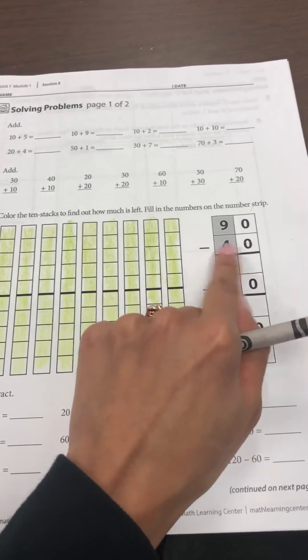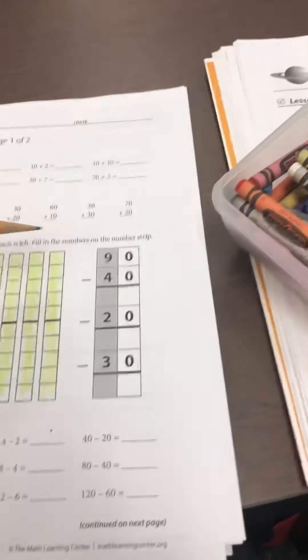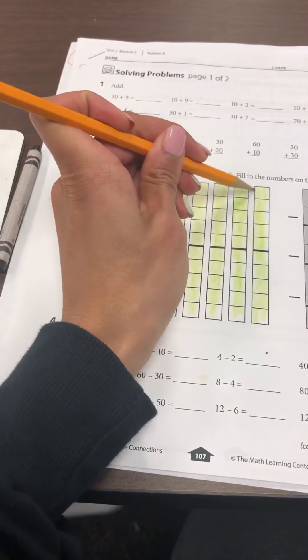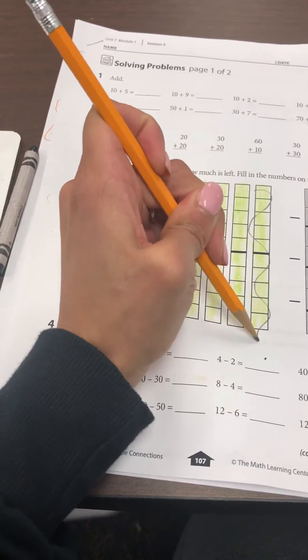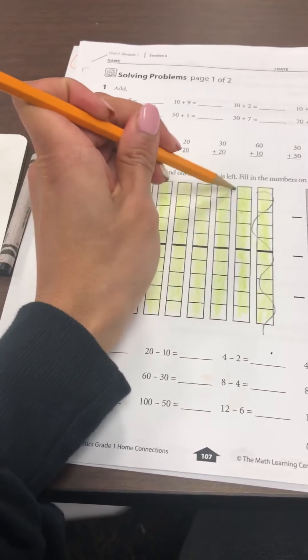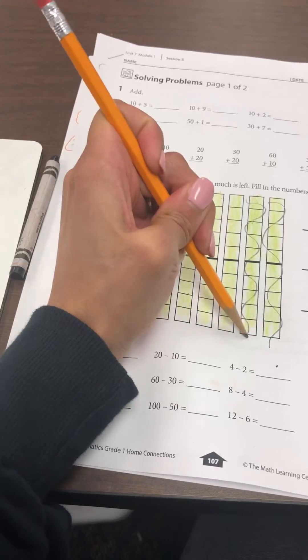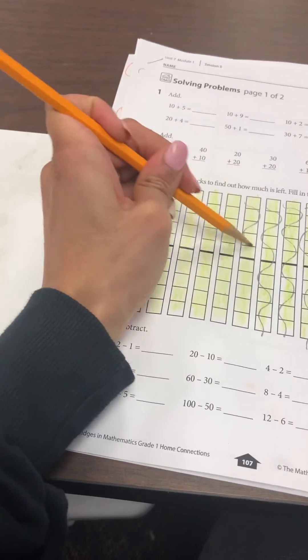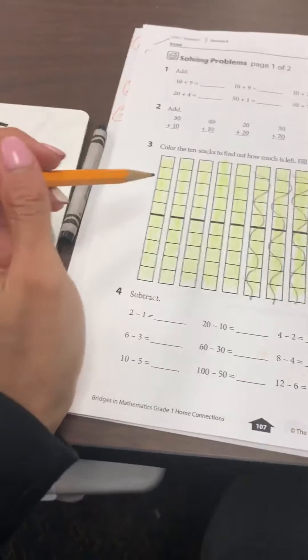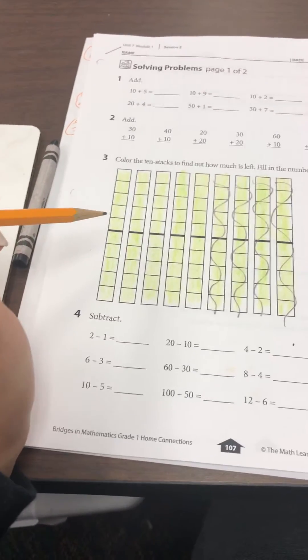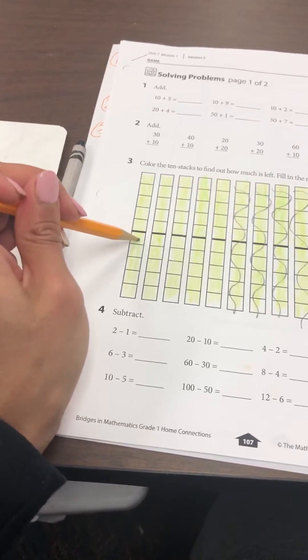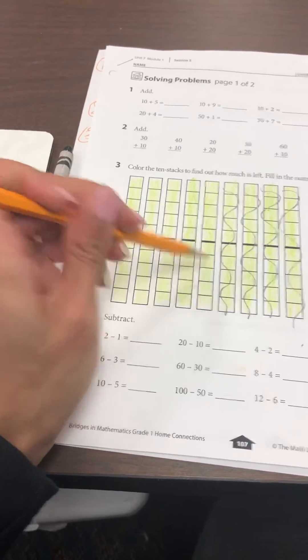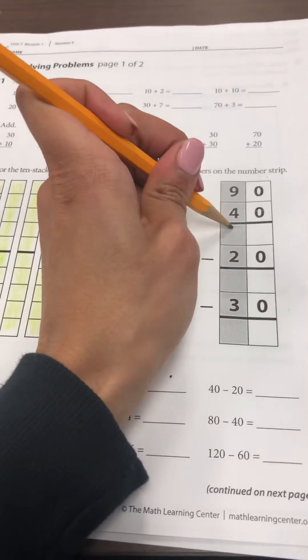And then it says to subtract 40. So what you're gonna do is you can either X them off or scribble them. So what I will do right now is I'll just do a scribble mark. So that's take away 10, 20, 30, 40. Then what your child needs to do is count how many ten frames are left: 10, 20, 30, 40, 50. So we're gonna write 50 right over here.